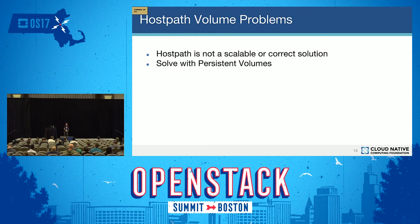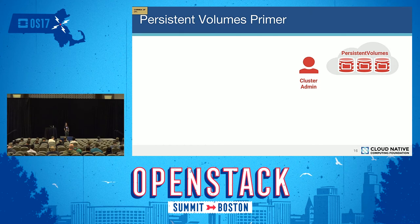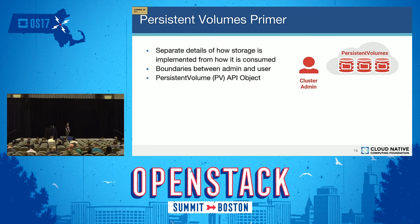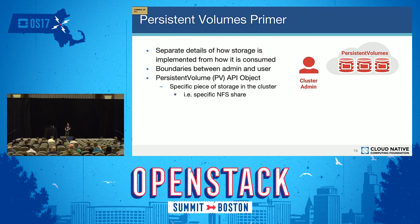The persistent volumes feature allows you to separate the details of how storage is implemented in the cluster from how it is consumed by the user. It sets boundaries between the cluster administrator and the user through two API objects. The first is the persistent volume, which represents a specific piece of storage in the cluster — such as a specific NFS share. This object is created and managed by the administrator and is not used directly in the pod spec.